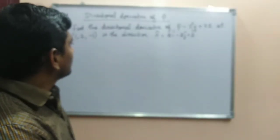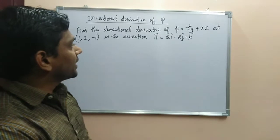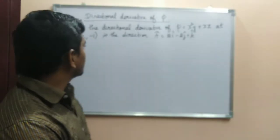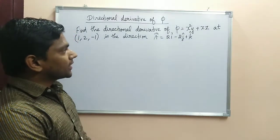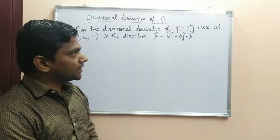The directional derivative of Phi. So this is the problem. Find the directional derivative of Phi equal to x²y + xe^z at (1, 2, -1) in the direction of a vector equal to 2i - 2j + k.